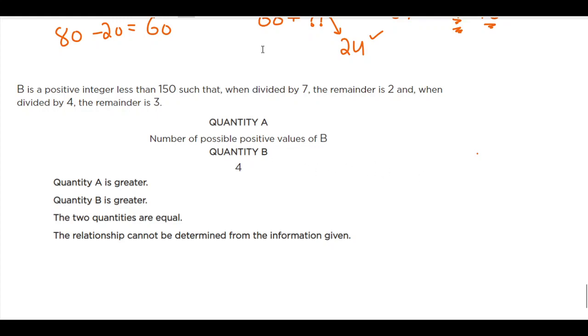Okay, so this question is basically saying that B is a positive integer less than 150. So I think we need to write this down. So B is a positive integer and its value is always going to be less than 150.